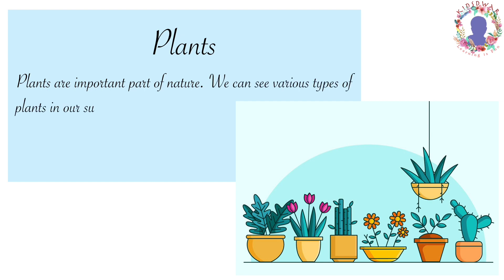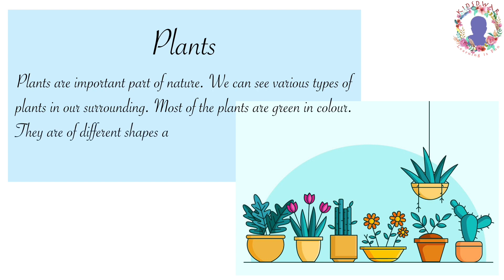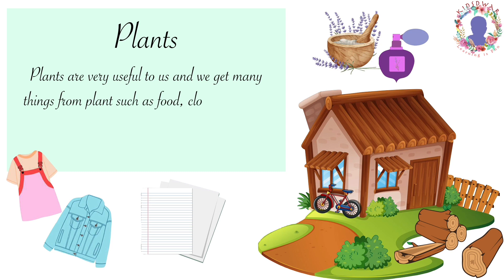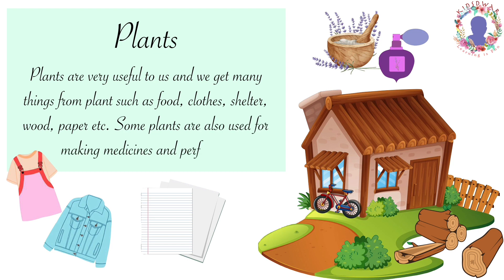We can see various types of plants in our surrounding. Most of the plants are green in color. They are of different shapes and sizes. They can live on land and in water. Plants are very useful to us and we get many things from plants such as food, clothes, shelter, wood, paper, etc. Some plants are also used for making medicines and perfumes.